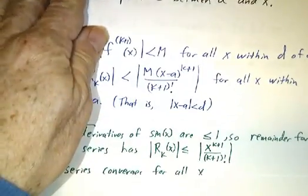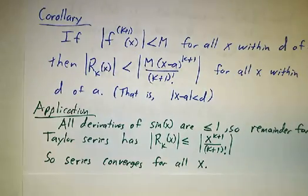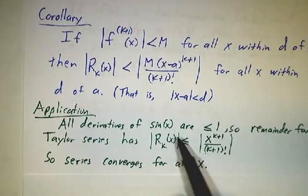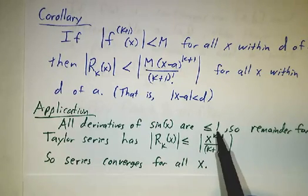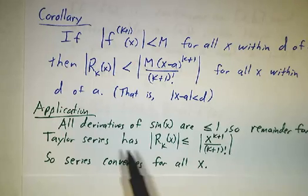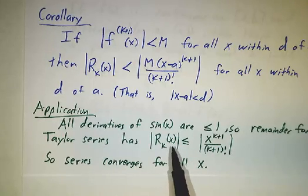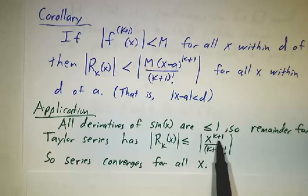And with that in hand, we can prove things like that the series for sine converges. Because of course, all of the derivatives of sine are either sine or cosine or minus sine or minus cosine, and they're all one or smaller. So if you write down the Taylor series for the sine function, the remainder term is bounded by 1 times x to the k plus 1 over k plus 1 factorial,